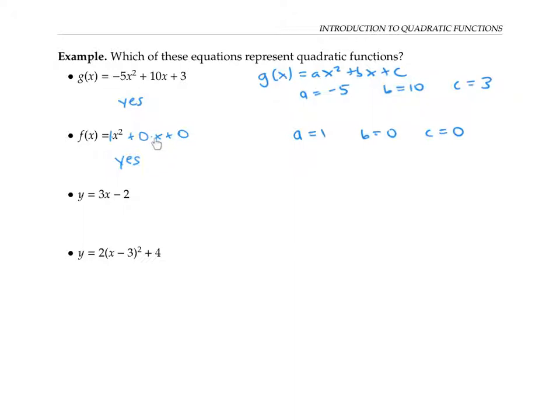It's perfectly fine for the coefficient of x and the constant term to be zero for a quadratic function, we just need the coefficient of x squared to be non-zero, so the x squared term is preserved.